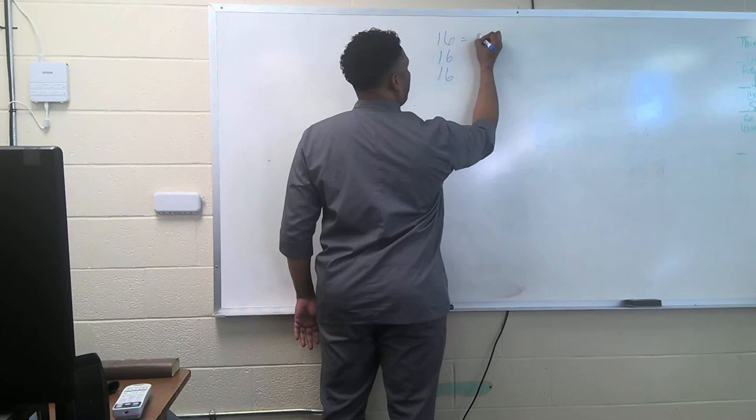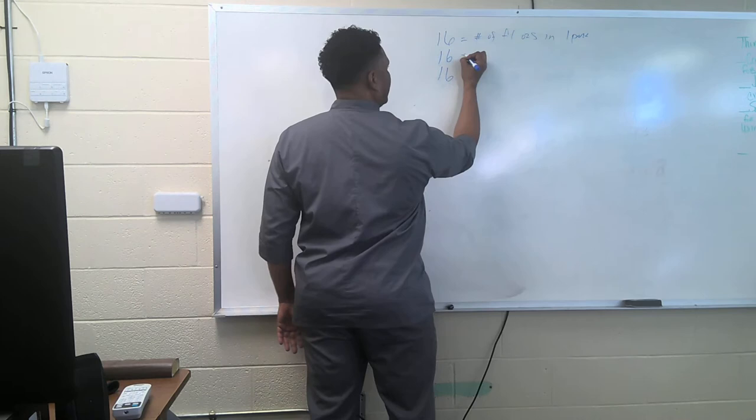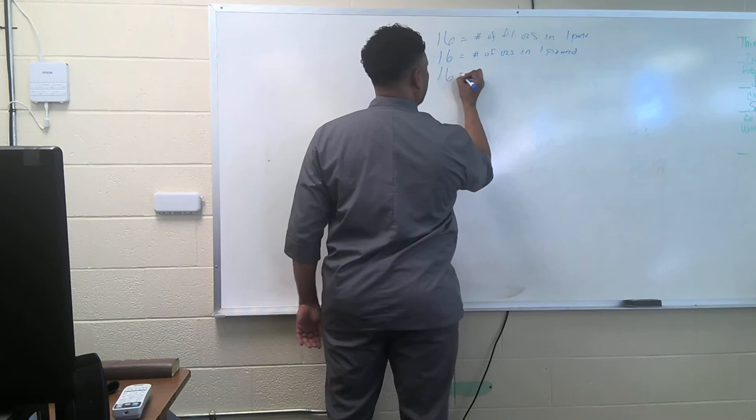First thing is 16 is the number of fluid ounces in one pint. Now 16 is also the number of ounces in one pound.